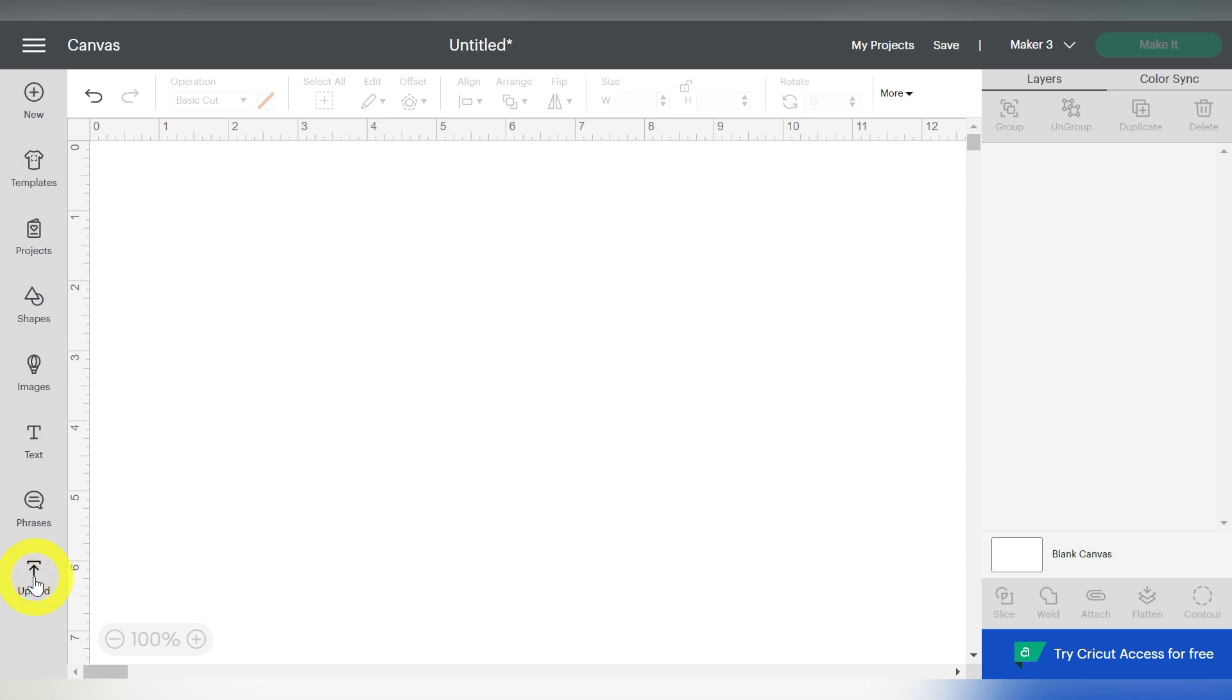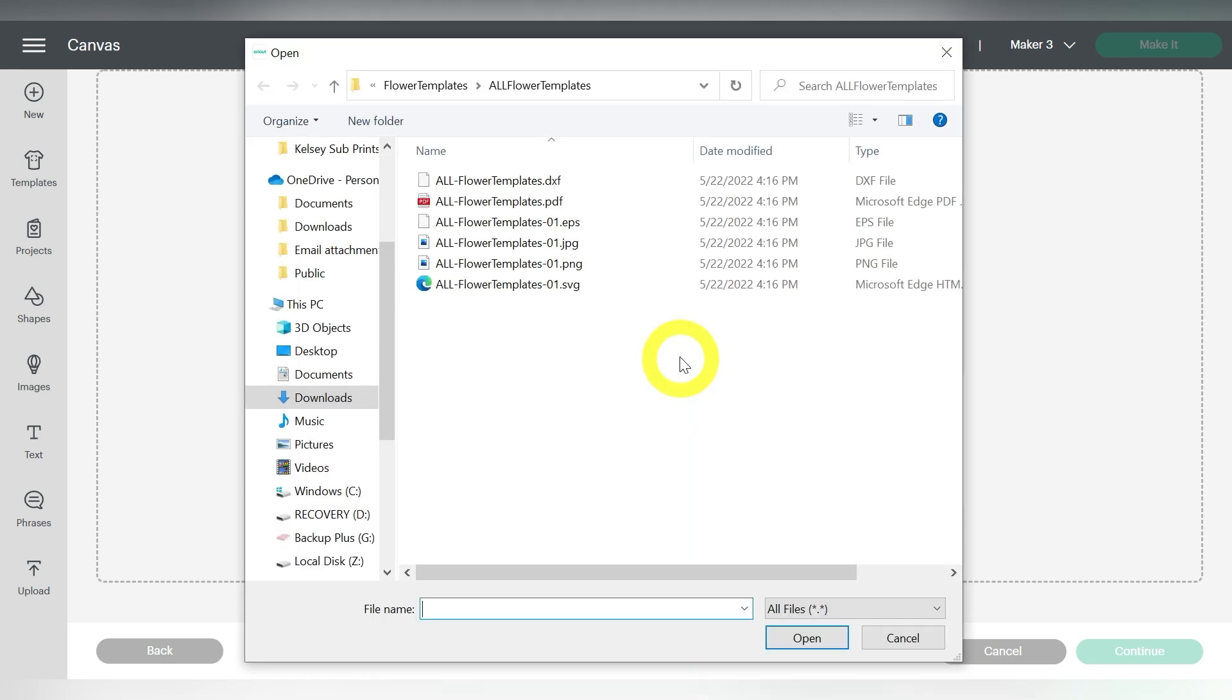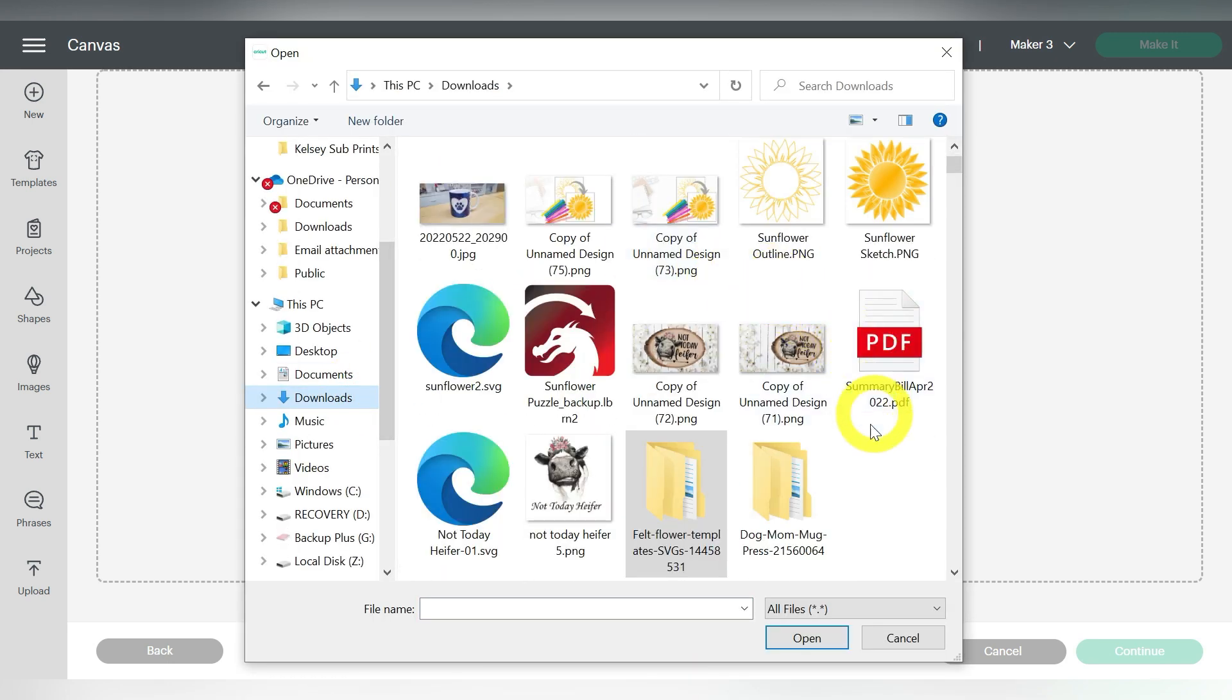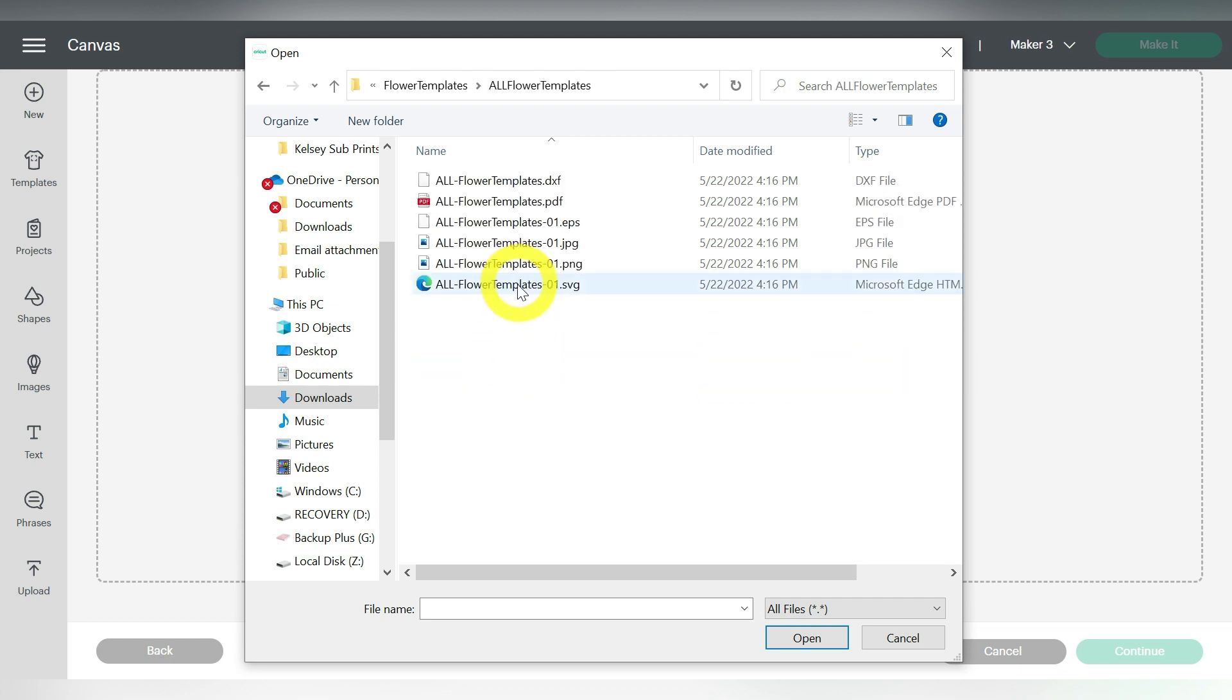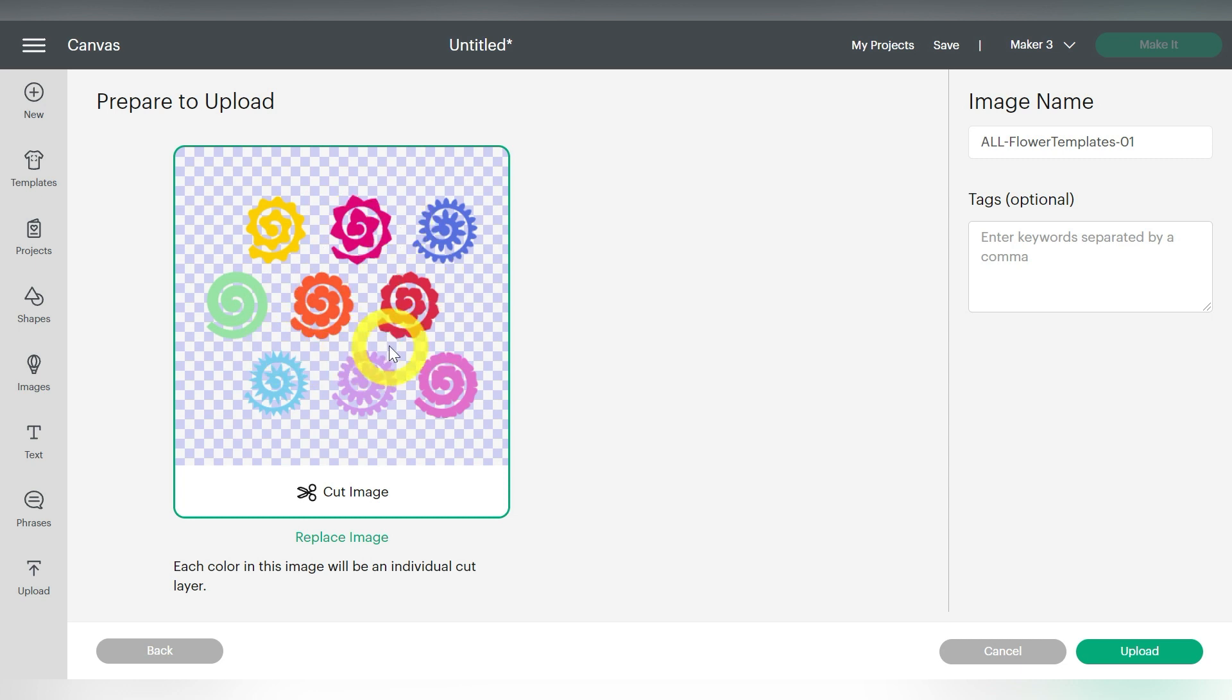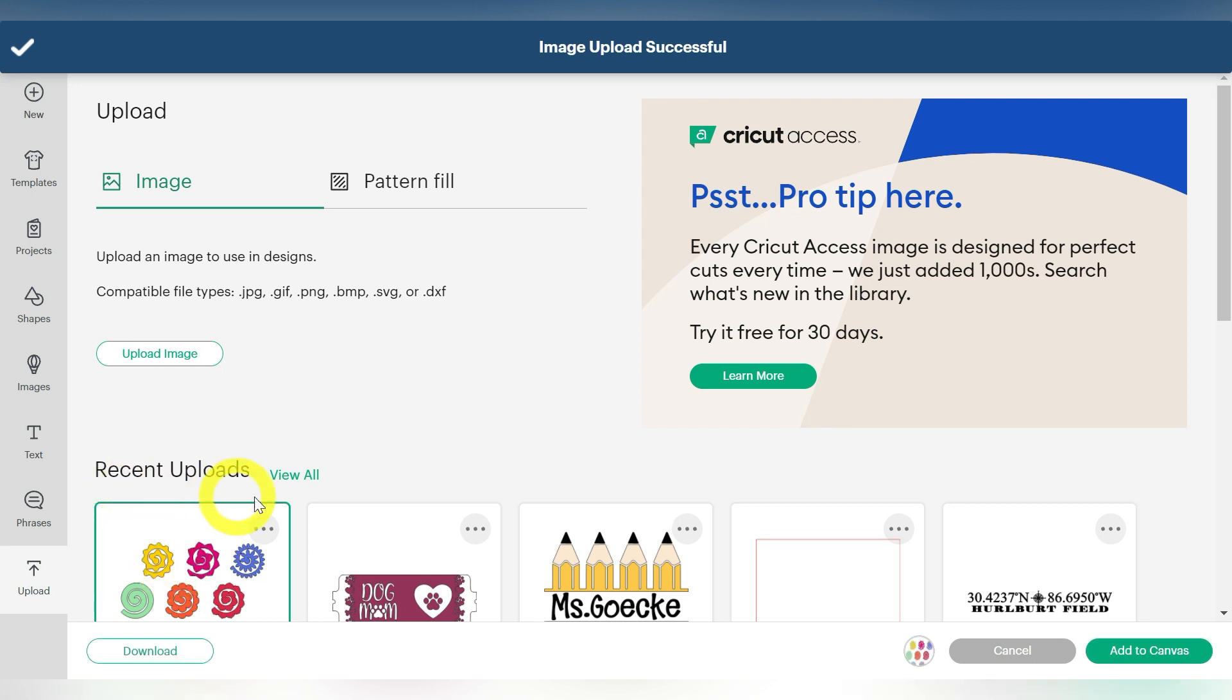So I'm going to come down here in the bottom left hand side and click Upload, Upload Image, and then Browse. Now I am in my Downloads folder, and I have already downloaded and unzipped this file that we're going to work with today. And these are flower templates, and each one is listed individually if you want to check those out. But I'm going to go ahead and import all flower templates here. So what that's going to do is give me all of them in one place. I'm going to go ahead and click Upload. That adds it to my recent upload. So select it and choose Add to Canvas.